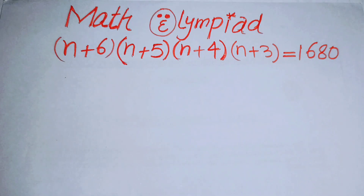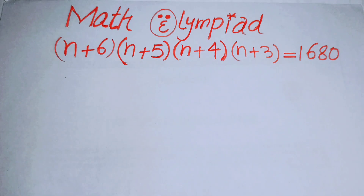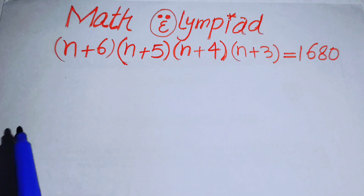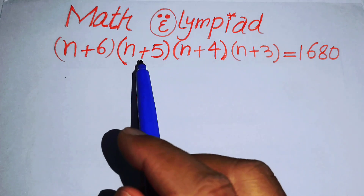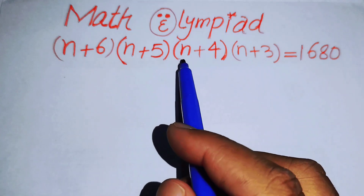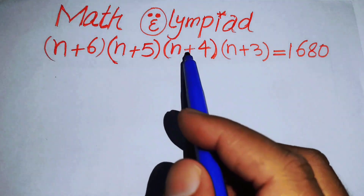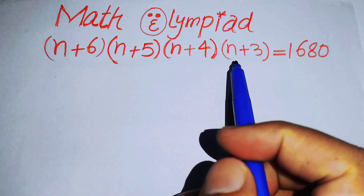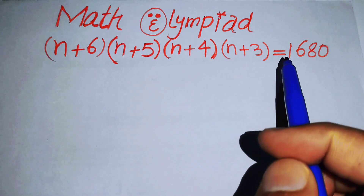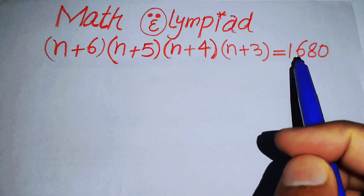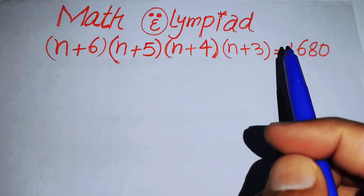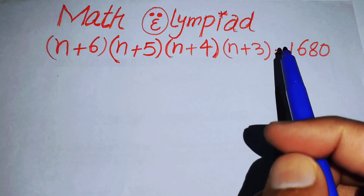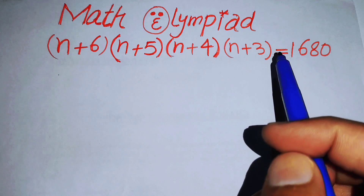Hello everyone, welcome back to the Map of Mathematics. In this video we are going to solve this nice algebra problem: (n+6)(n+5)(n+4)(n+3) = 1680, and we will solve this problem for the values of n.